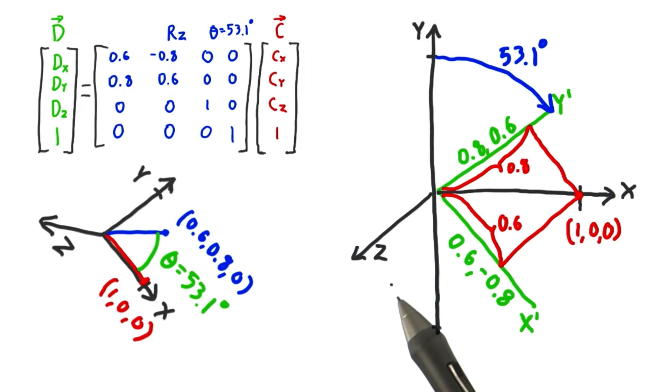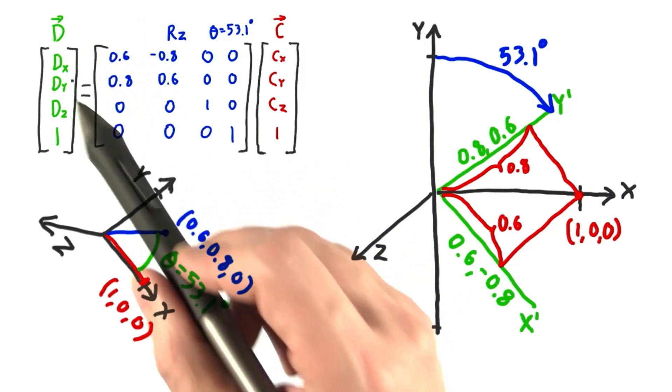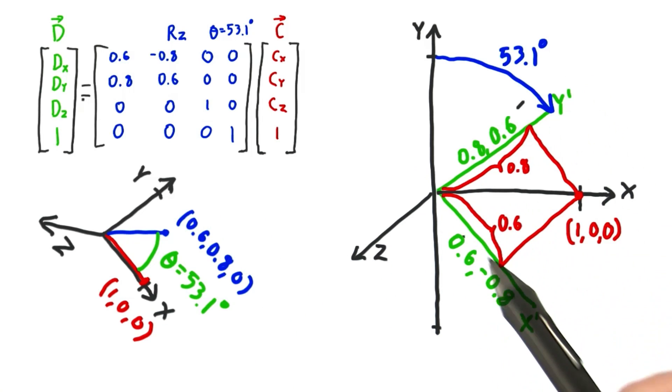In an earlier lesson, we talked about how the dot product between two normalized vectors gives us the cosine of the angle between them. Rotation is a similar use of the dot product. We use the cosine of the rotation angle to give us two new axes, both of which are normalized.